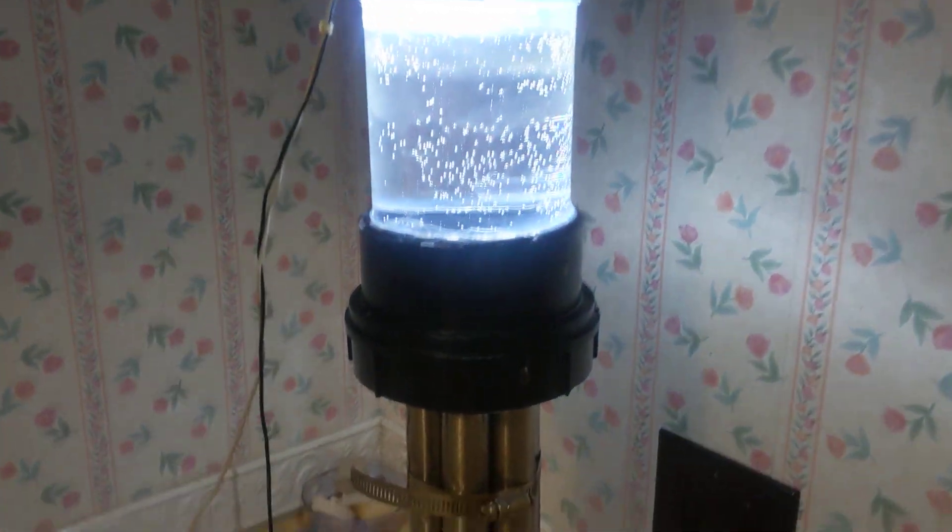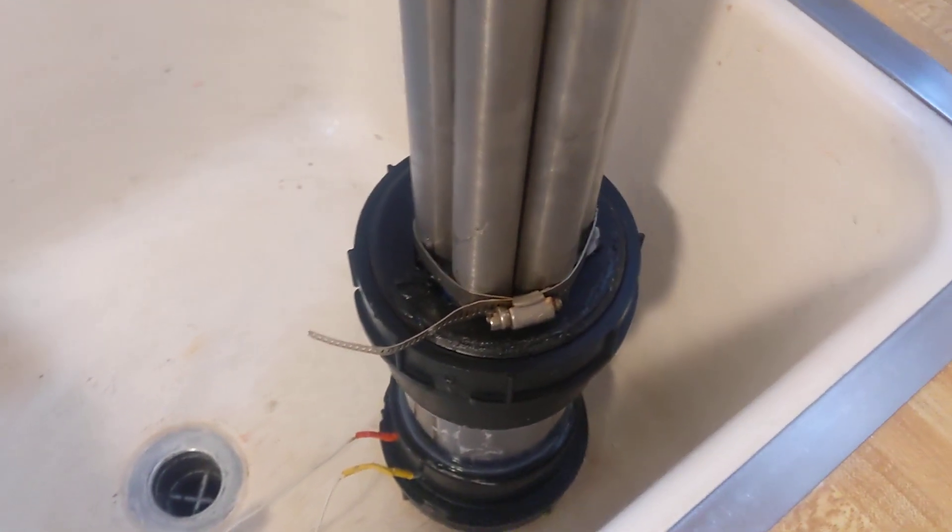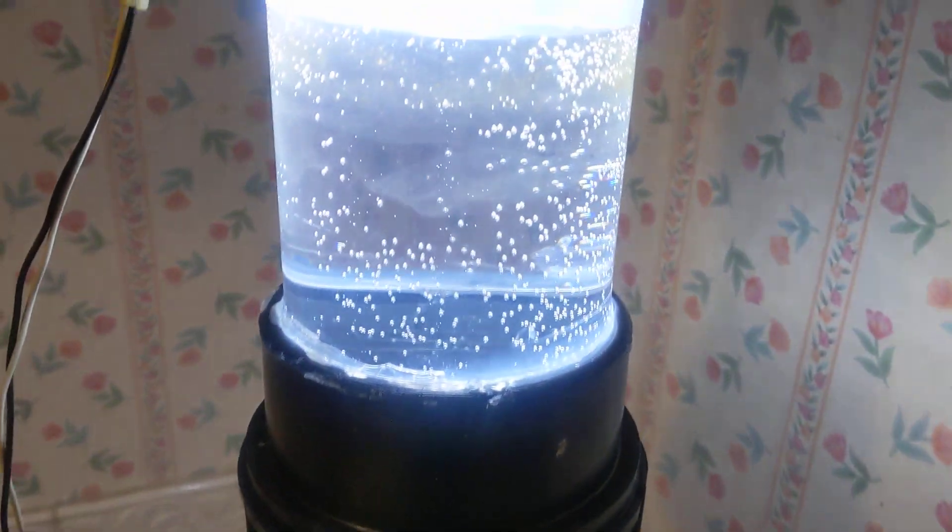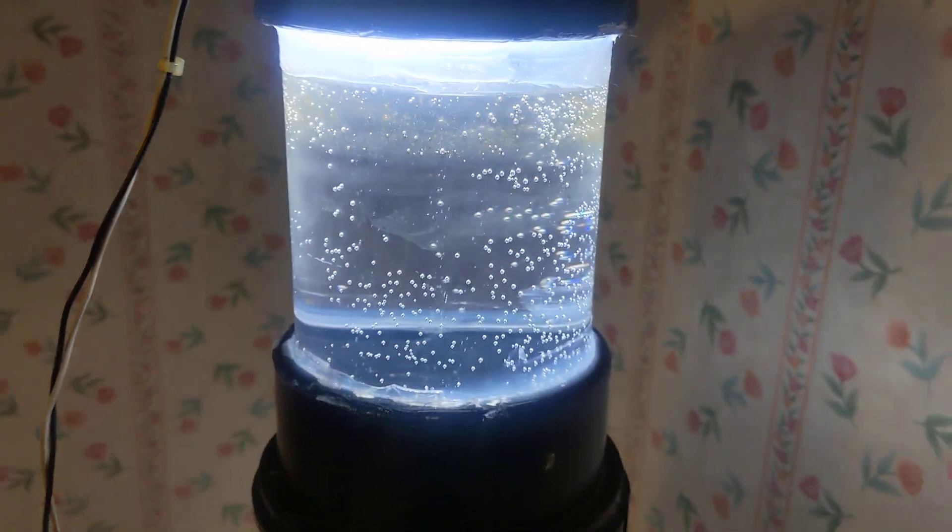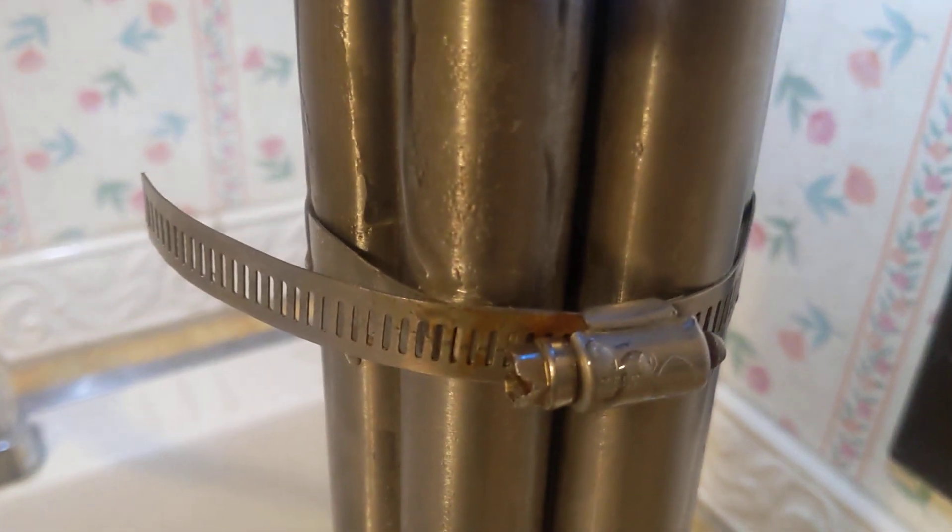This is a 24 inch - one's a 304, the other is a 316L. The inner tube's a 316L and the outer tube's a 304 stainless steel. The only difference with this cell really is I'm going parallel.